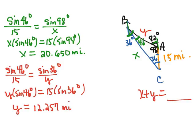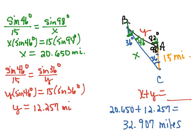So to get the answer to our question to see how far the boat traveled, we're going to add X and Y together. So 20.650 added to 12.257 will give us the sum, 20.650 plus 12.257 is 32.907 miles.